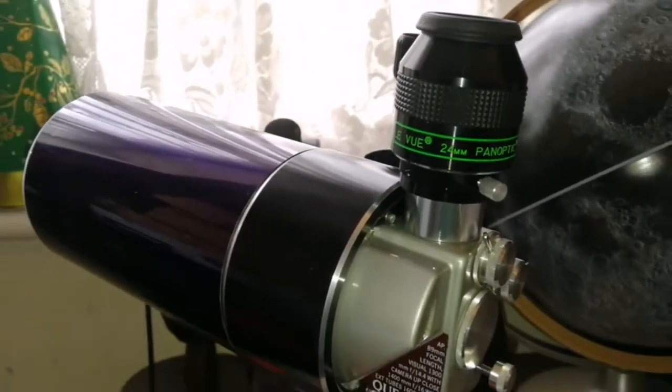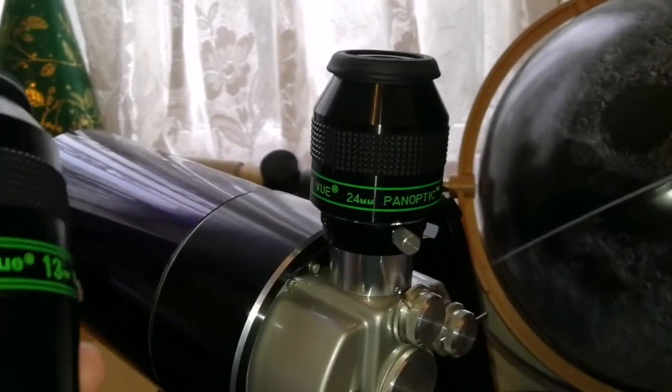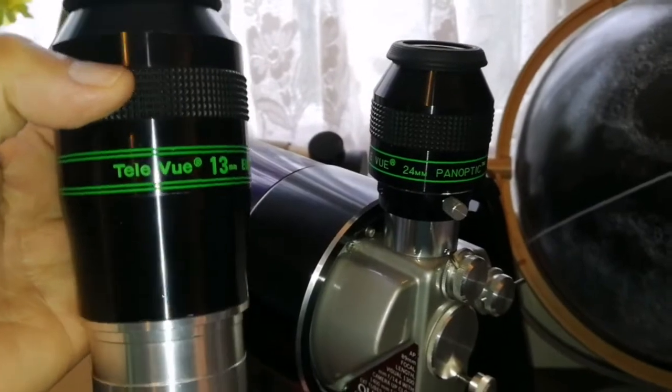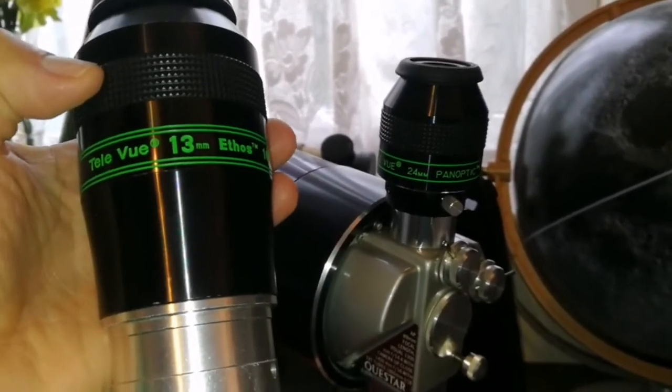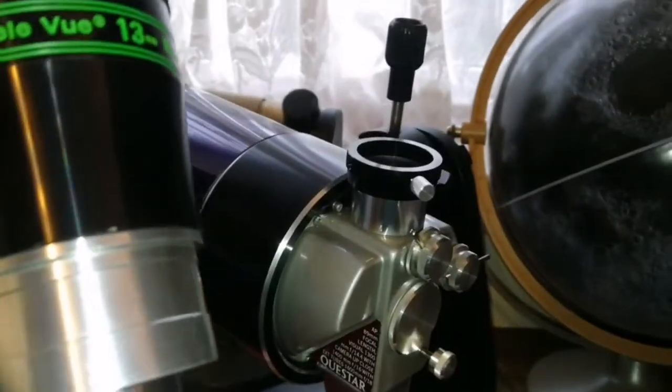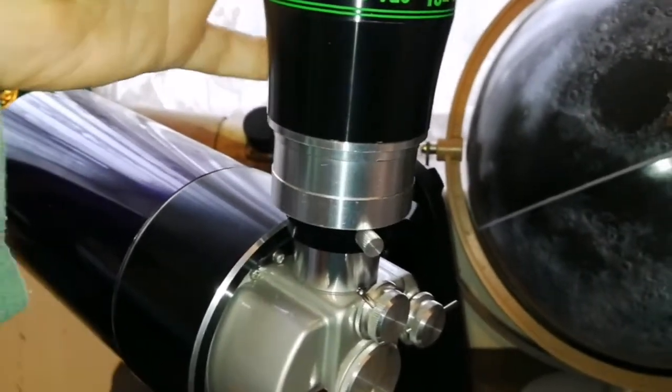And I can put a, let me see if I can put the Ethos here. So Panoptic 24mm easily goes there. Now let's see if the Ethos can stay there. That's a much bigger eyepiece, TeleVue Ethos 13mm. Let's just see if I can put it there. Now we are going to see history being made. Oh yes.